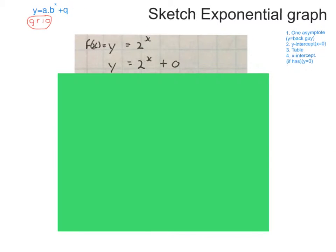So here is our first equation. We've got f of x equals y equals 2 to the power of x. Because the formula tells me it looks like this, I've got to bring in a q just to remind me. So I rewrite it as y equals 2 to the power of x plus 0.